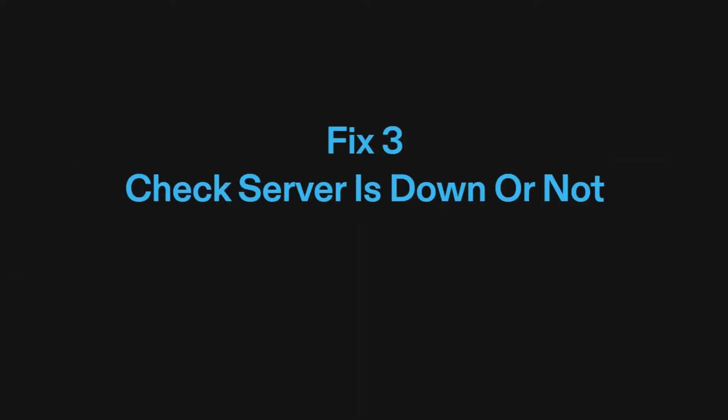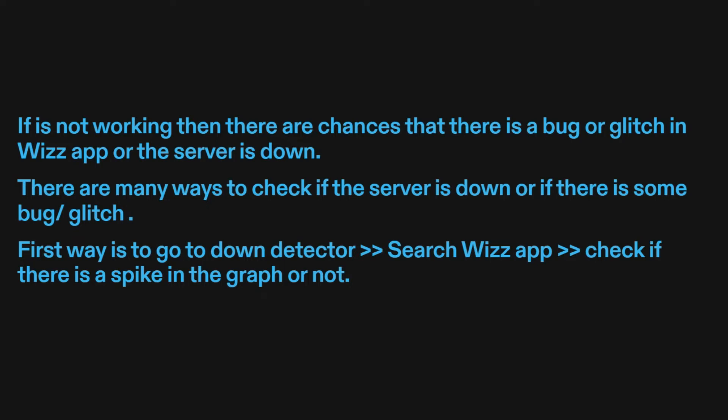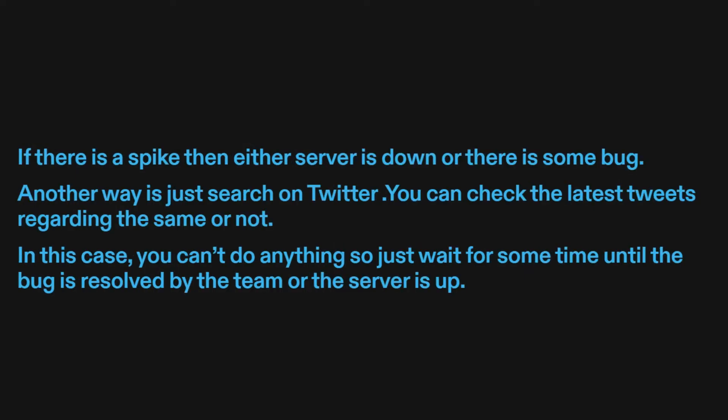Fix three: check if the server is down or not. If it's not working, there are chances that there is a bug or glitch in WizApp or the server is down. There are many ways to check — first, go to Down Detector and search WizApp. Check if there is a spike in the graph. If there is a spike, then either the server is down or there is some bug.